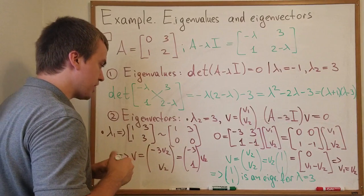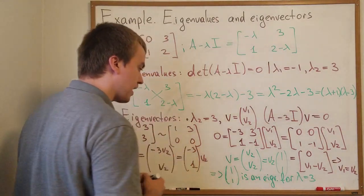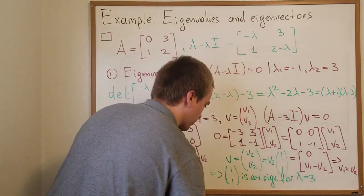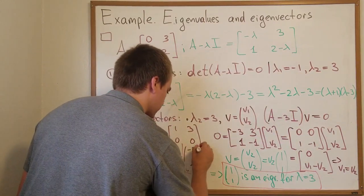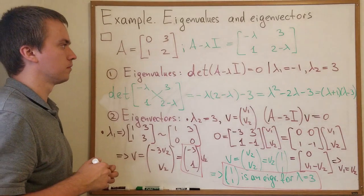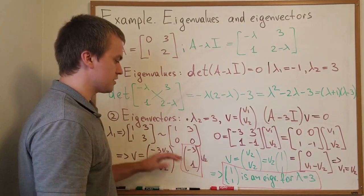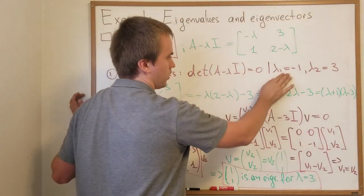So from here I can see that my second eigenvector, so this is my first one. And my second eigenvector is going to be this one negative 3 and 1. And let's check is this actually my eigenvector for eigenvalue negative 1.